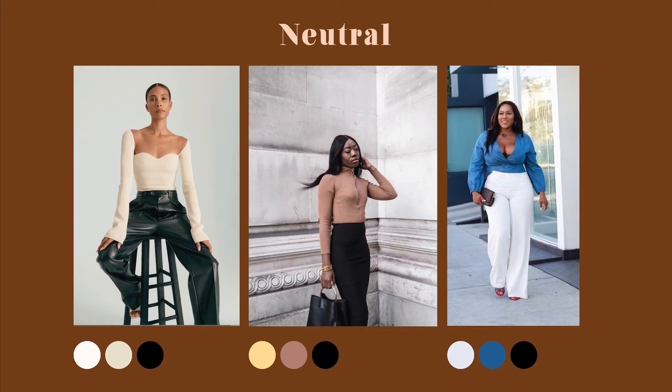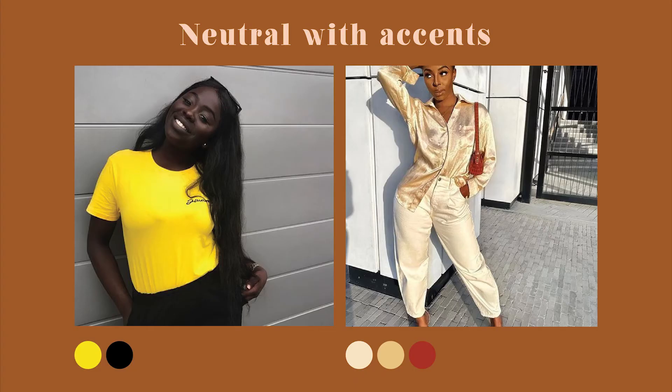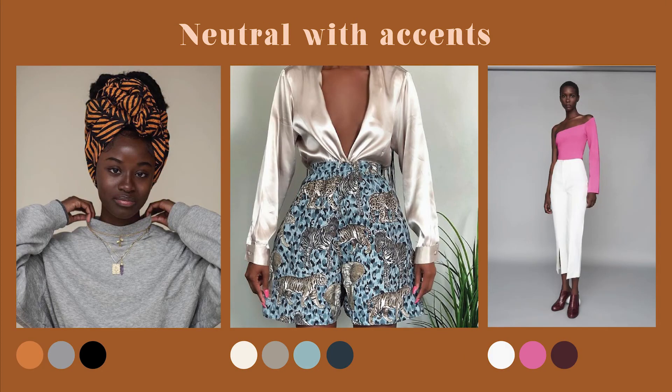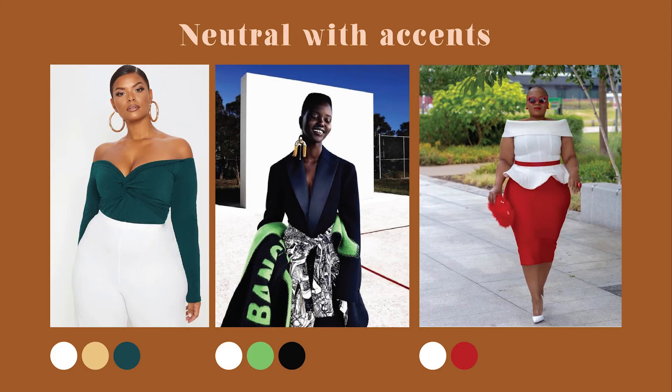You can wear neutrals with neutrals, monochromatic neutrals, or neutrals with accents. Neutrals with accents is when you wear mostly neutral colors but still want a pop of color. This is a great option if you want to add more color to your wardrobe but don't want to feel overwhelmed by color blocking. This technique will help you dip your toes into wearing more colors if you usually just wear neutral shades — like wearing a neutral color base with a bag or shirt in an interesting color.